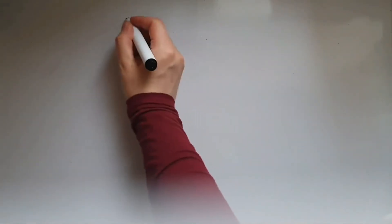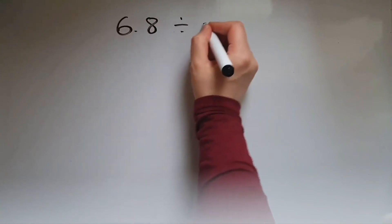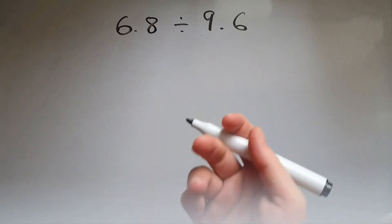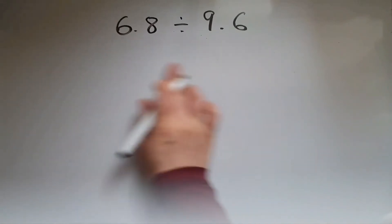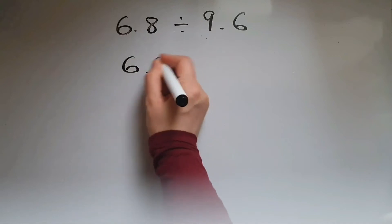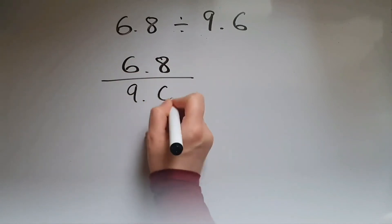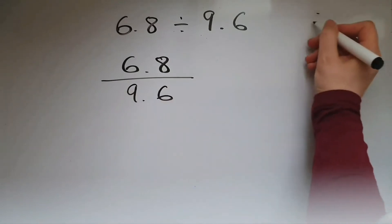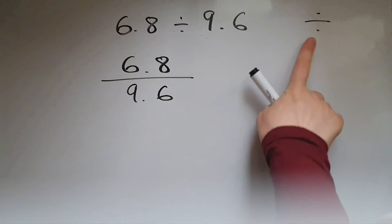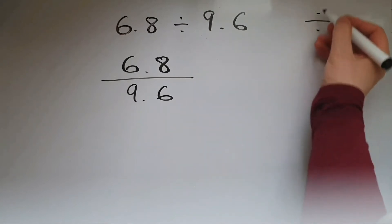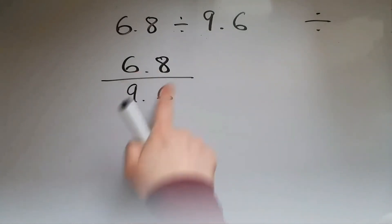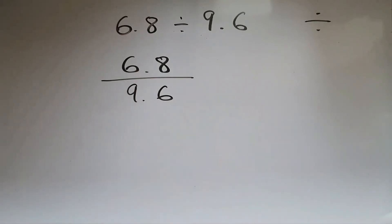Now we have 6.8 divided by 9.6. Another way I can write this is as a fraction: 6.8 over 9.6, because the fraction line means division, just like the division symbol. What we're going to do is multiply the top and the bottom number by 10.